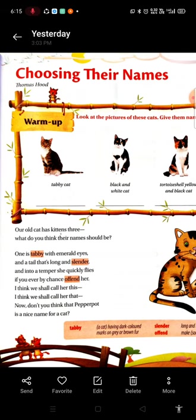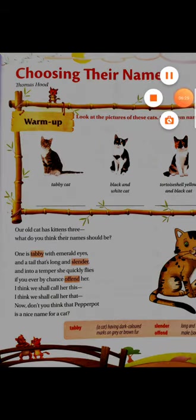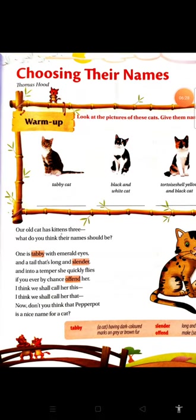'One is tortoiseshell, yellow and black, with plenty of white about him. If you tease him at once he sets up his back — he's a quarrelsome one, never doubt him.' I think we shall call him this, I think we shall call him that — don't you think that's a nice name for a cat?